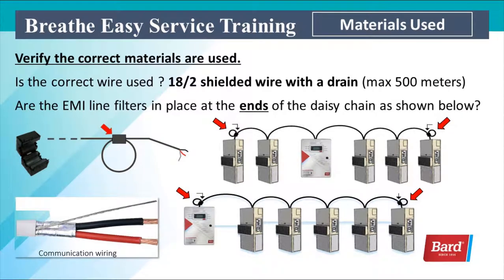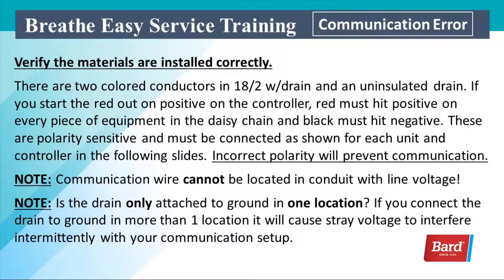Next let's look at the materials used. We need to verify that the correct material is in place: did we use 18/2 shielded with a drain, and is it under 500 meters? Are the EMI line filters in place at the end of the daisy chain as shown? There's one line filter at each end of the daisy chain. It doesn't matter what position the controller is in — it could be in the middle or on the end. In the lower left corner is a picture of our communication wire — this is 18/2 stranded with a shield wrapped around the wires and an exposed drain. To install an EMI filter, simply make a loop with the wire and clamp it — that filter is designed to keep our wire from becoming an antenna.